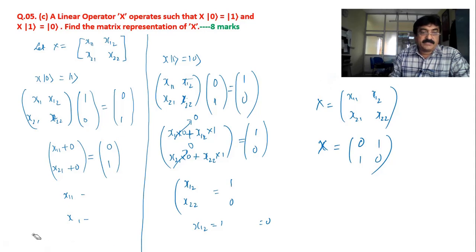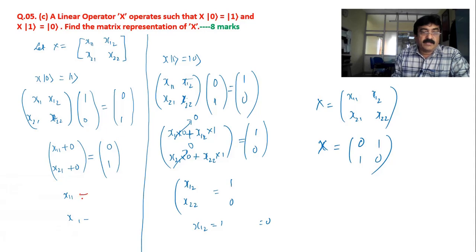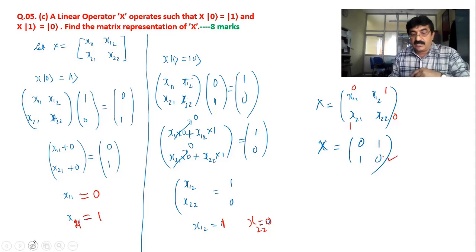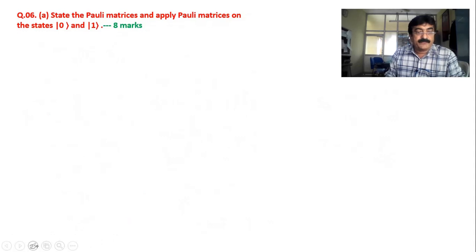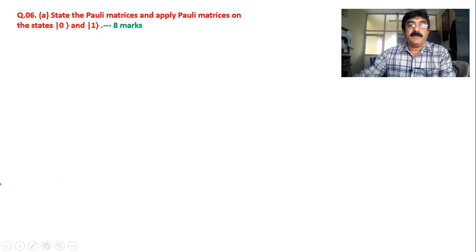Writing them neatly: X11 = 0, X21 = 1, X12 = 1, X22 = 0. Therefore the matrix X equals [0, 1; 1, 0]. That's all about this numerical problem.